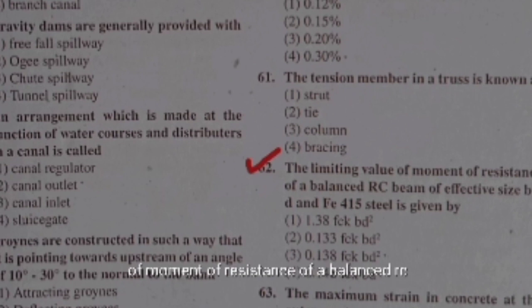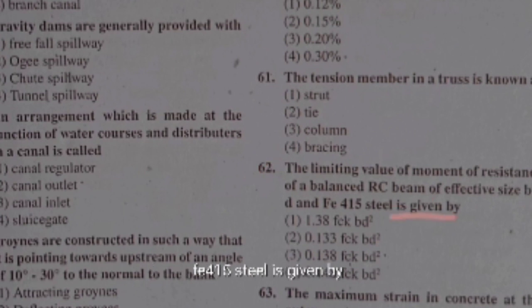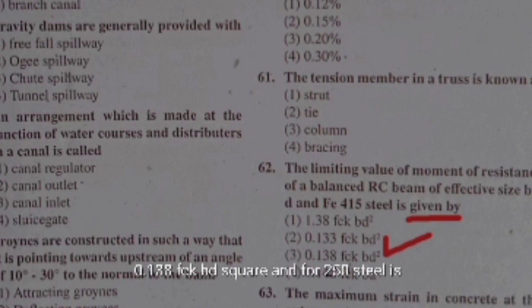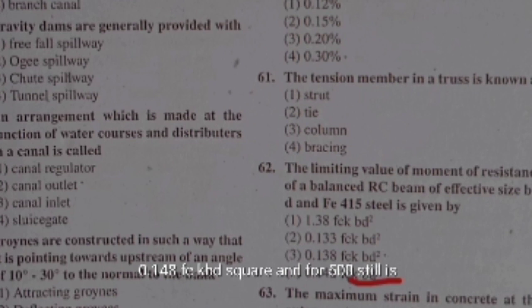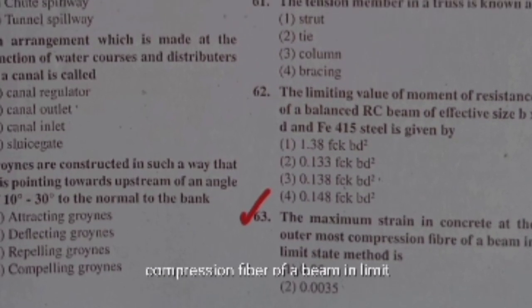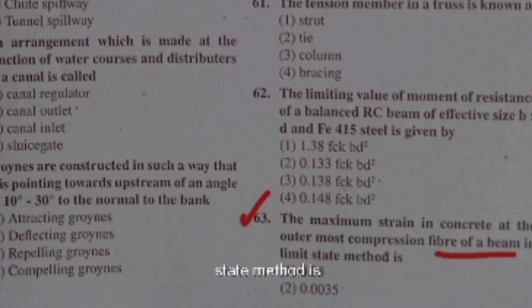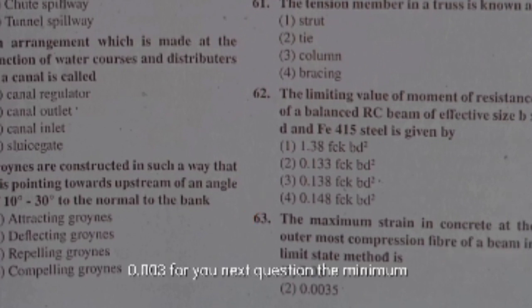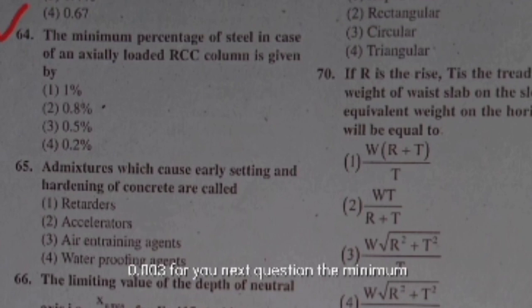The limiting value of moment of resistance of a balanced RC beam of effective size b×d: for Fe 415 steel it is 0.138 fck bd², for Fe 250 steel it is 0.148 fck bd², and for Fe 500 steel it is 0.133 fck bd². The maximum strain in concrete at the outermost compression fiber of a beam in the limit state method is 0.0035.